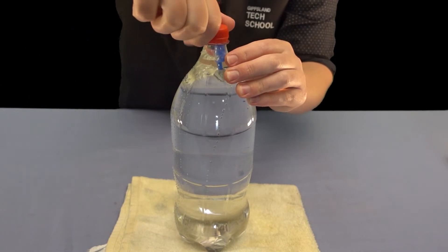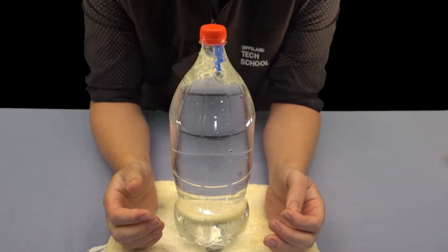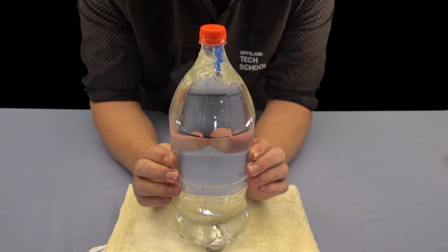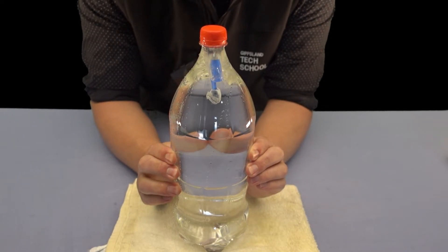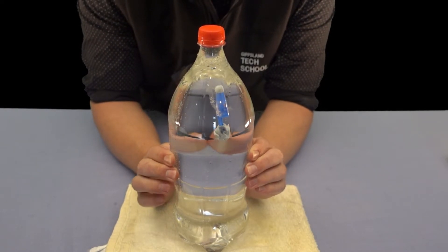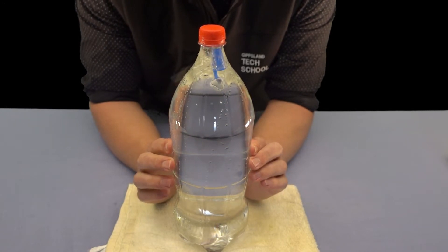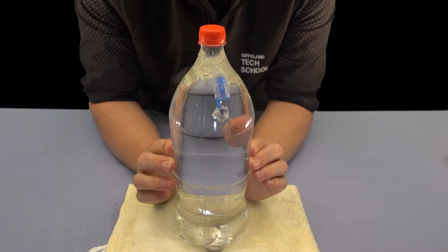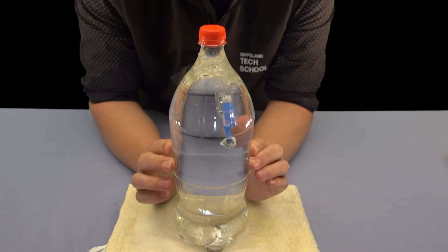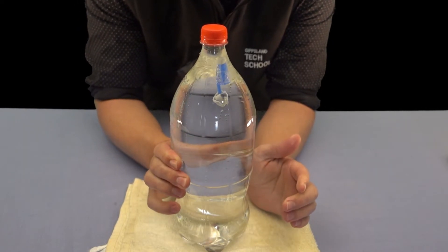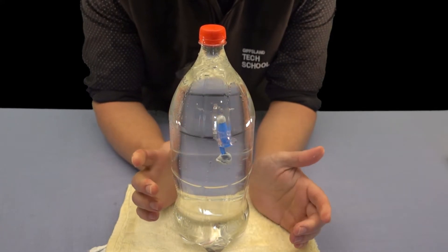And now we're ready for our jellyfish to dance. To do this, it's simply a matter of squeezing the bottle. As I squeeze, you can see my jellyfish starts to move up and down. So if I let go, it floats back to the top. As I squeeze in, my jellyfish starts to drop down towards the bottom. And you've now made a dancing jellyfish.